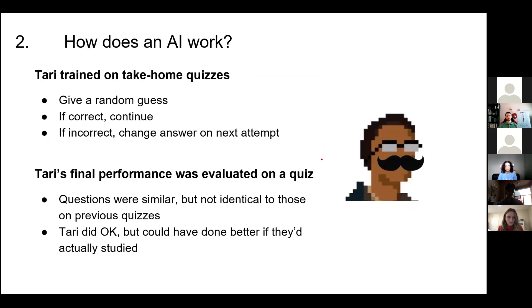To summarize what Terry did: they trained on take-home quizzes, started by initially guessing answers, then changed their answers if they were wrong, and their final performance was evaluated on a quiz with similar questions. In the end, they passed. Terry did okay, but they could have done better if they'd just actually studied like a normal person.